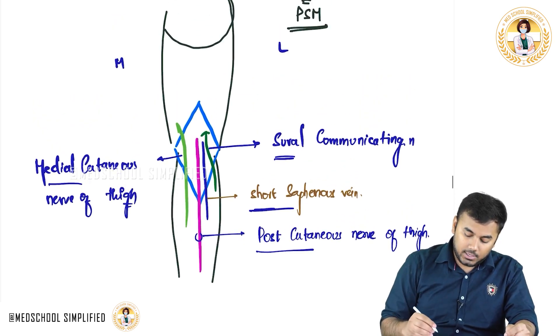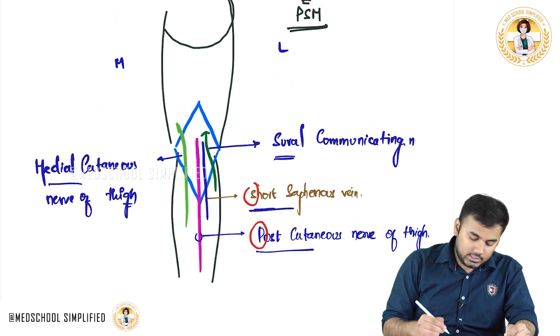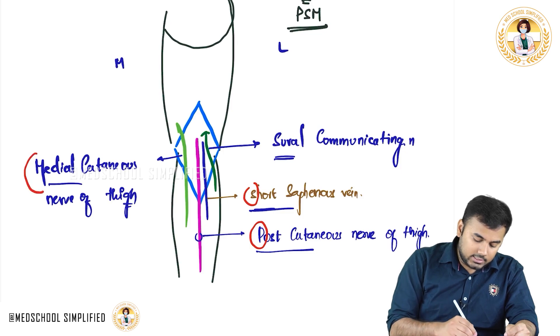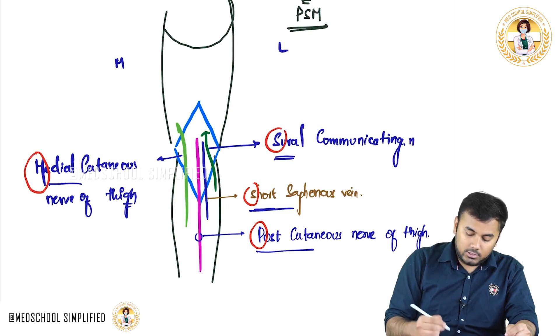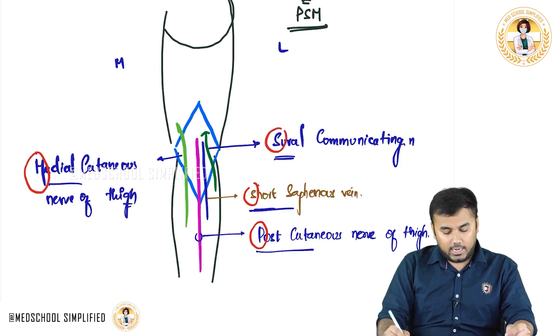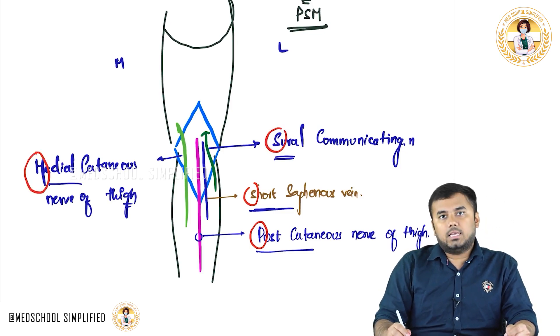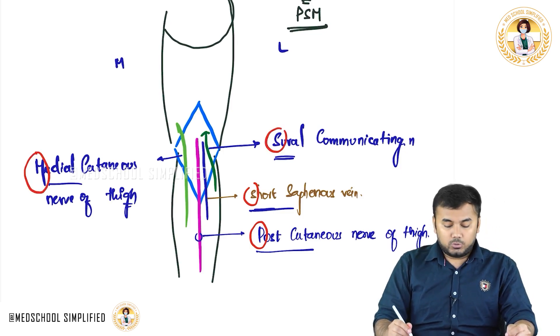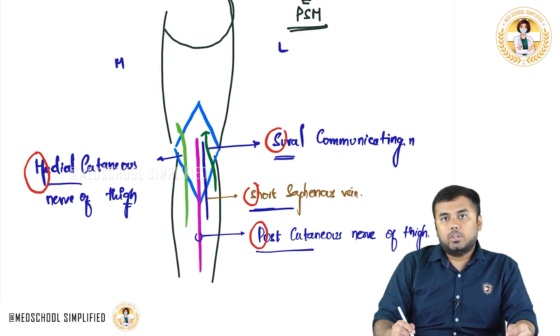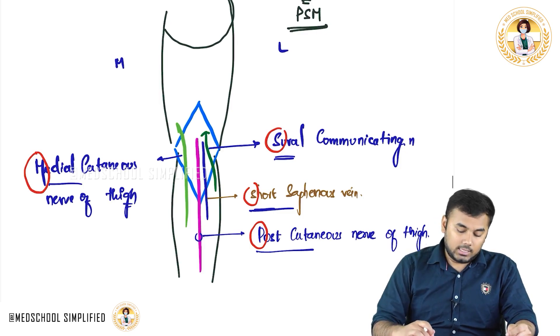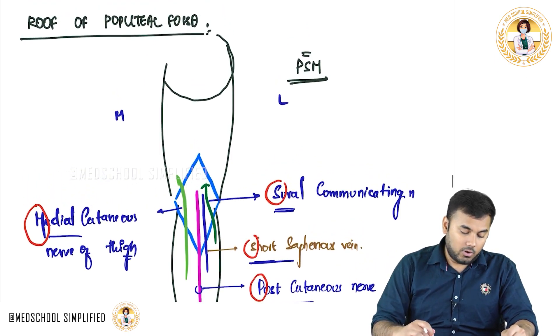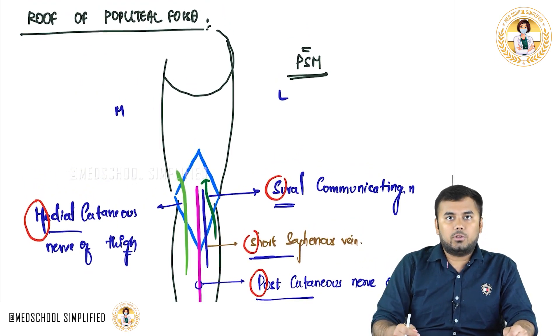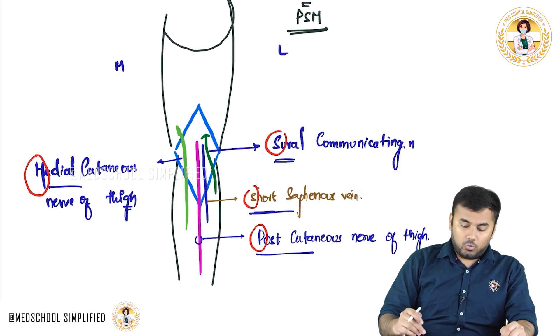So how many cutaneous nerves do we have? We have two cutaneous nerves: exactly in the center posteriorly is the posterior cutaneous nerve, and medially is the medial cutaneous nerve. Apart from those, we have S for short saphenous vein and S for sural communicating nerve. So remember the mnemonic PSM — P, S, and M. These are the structures forming the roof of the popliteal fossa.